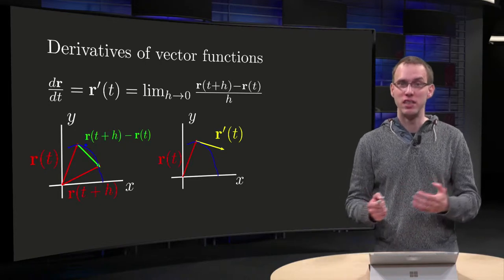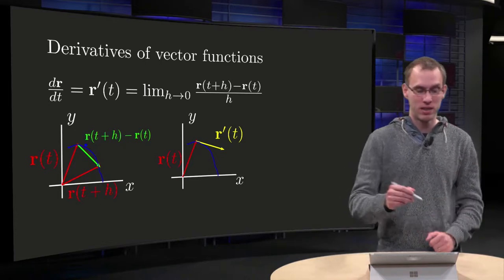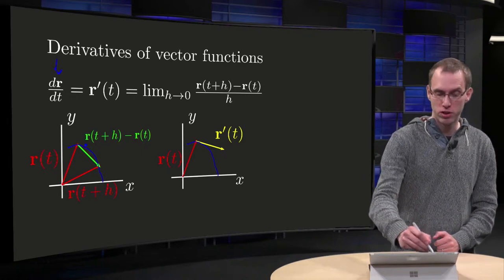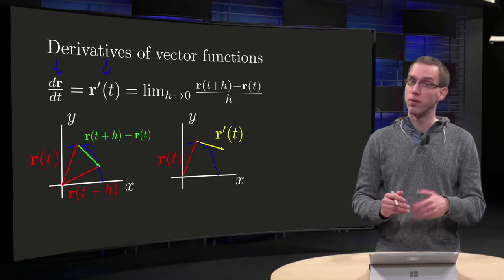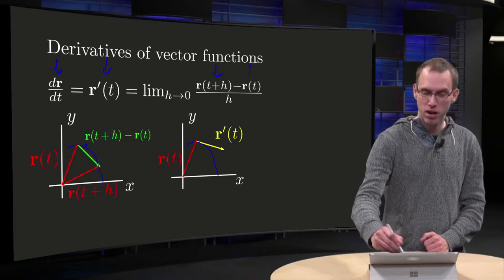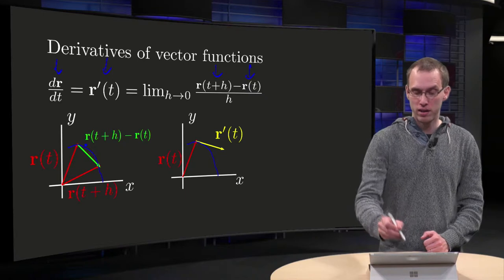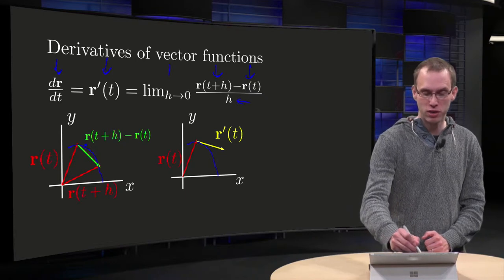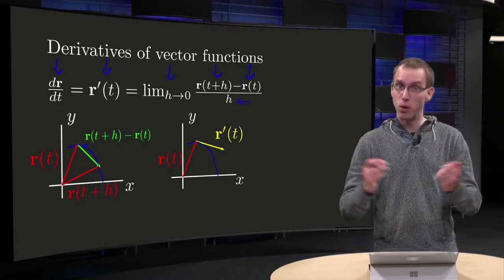First the definition, that is what you expect. So the d/dt of r, also denoted by r'(t): you take r at t plus h, you subtract r of t, divide by h and take the limit h to zero. Just as a normal derivative.